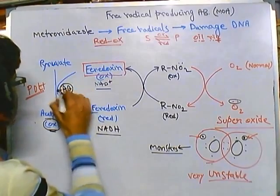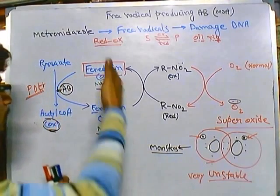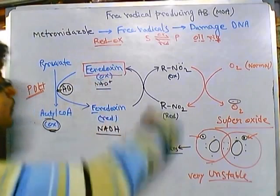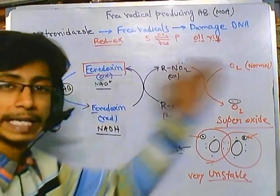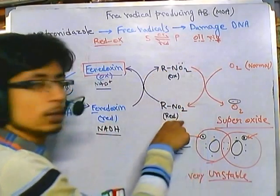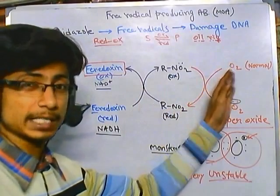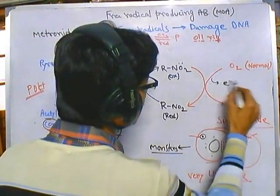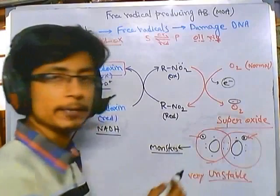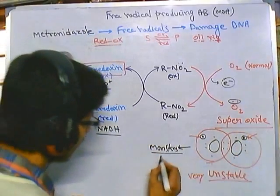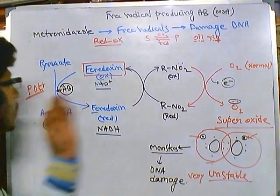Metronidazole helps convert oxidized ferredoxin to reduced ferredoxin. Then the reduced ferredoxin is set back to the oxidized form — during this, RNO₂ is converted into RNO₂ with a lone pair of electron as two electrons are removed. Then this RNO₂ is reduced again, and during that reduction it oxidizes O₂. As O₂ is oxidized — electrons are removed — O₂ is converted into superoxide with a lone pair of electron, which then damages the DNA.